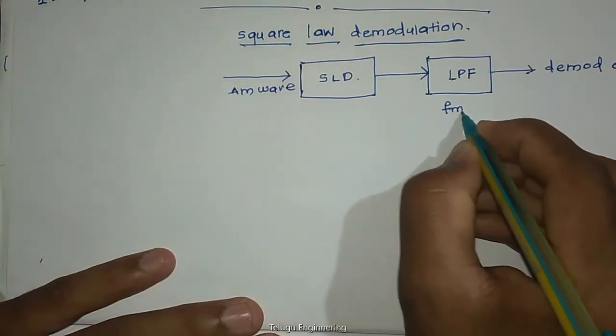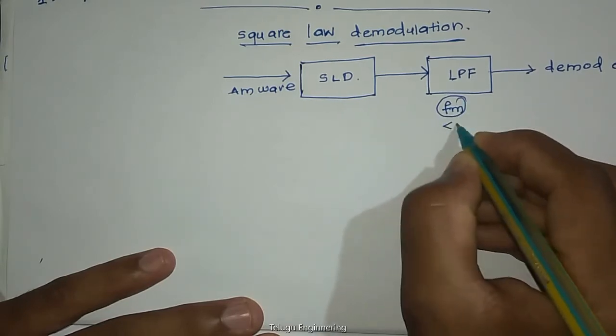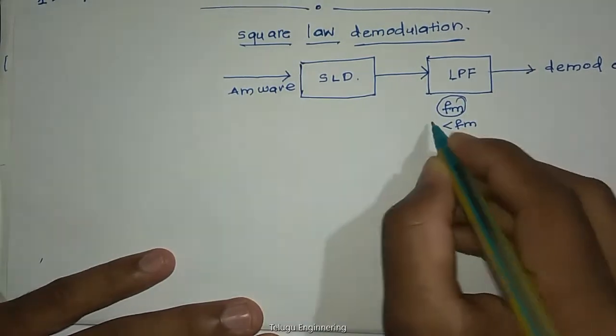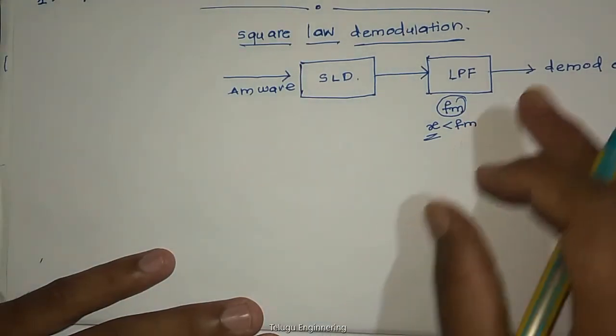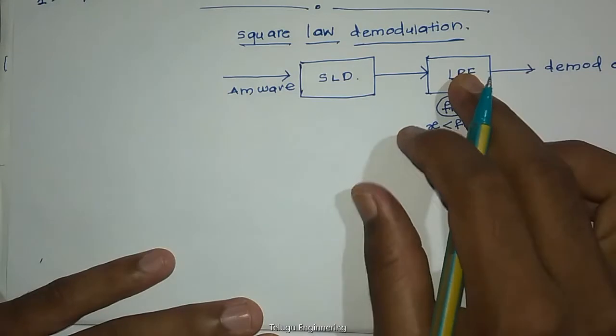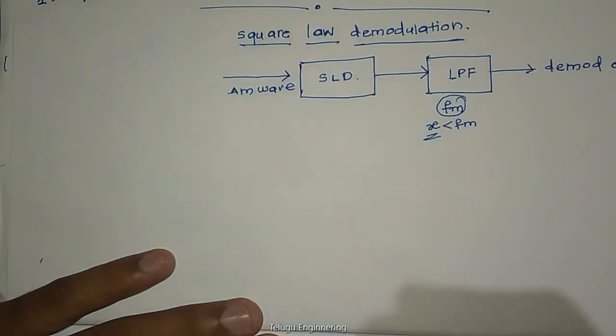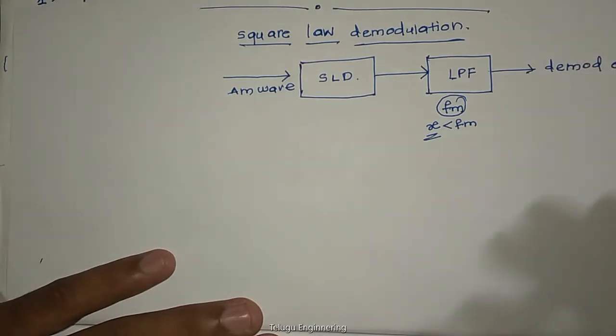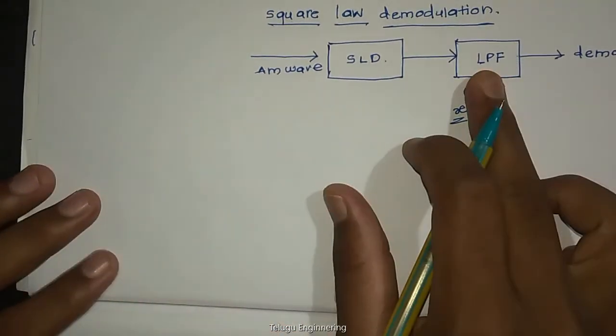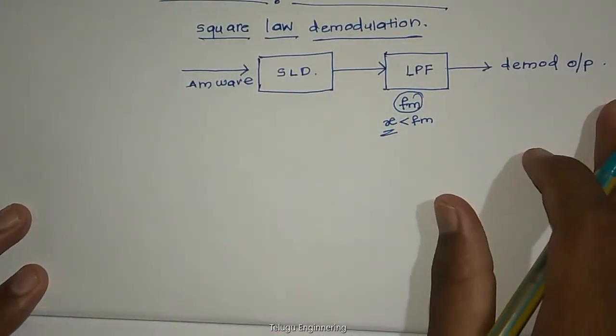We will get the calls in the end from the low pass filter. Only message frequency FM or less than FM, any frequency which is less than FM, only that frequency the low pass filter will allow. It will be rejecting others. Low pass filter, high pass filter, and band pass filter idea I already discussed in another video.